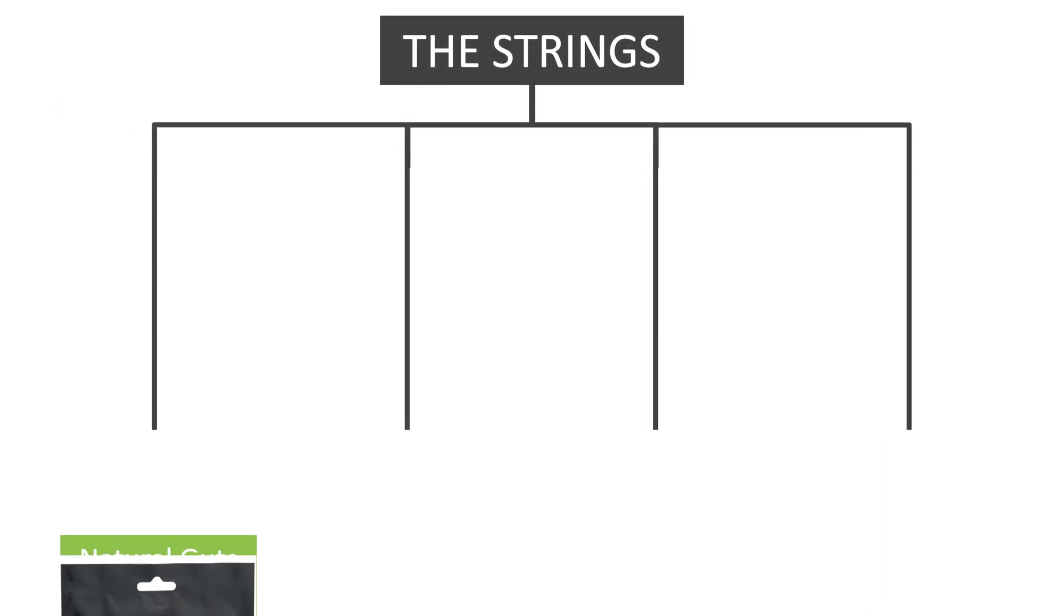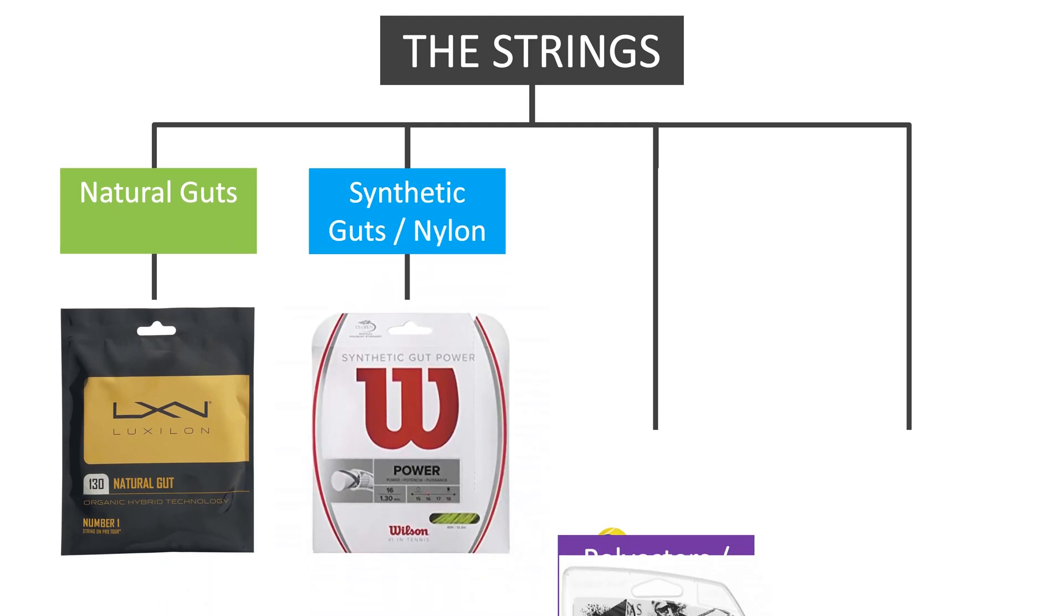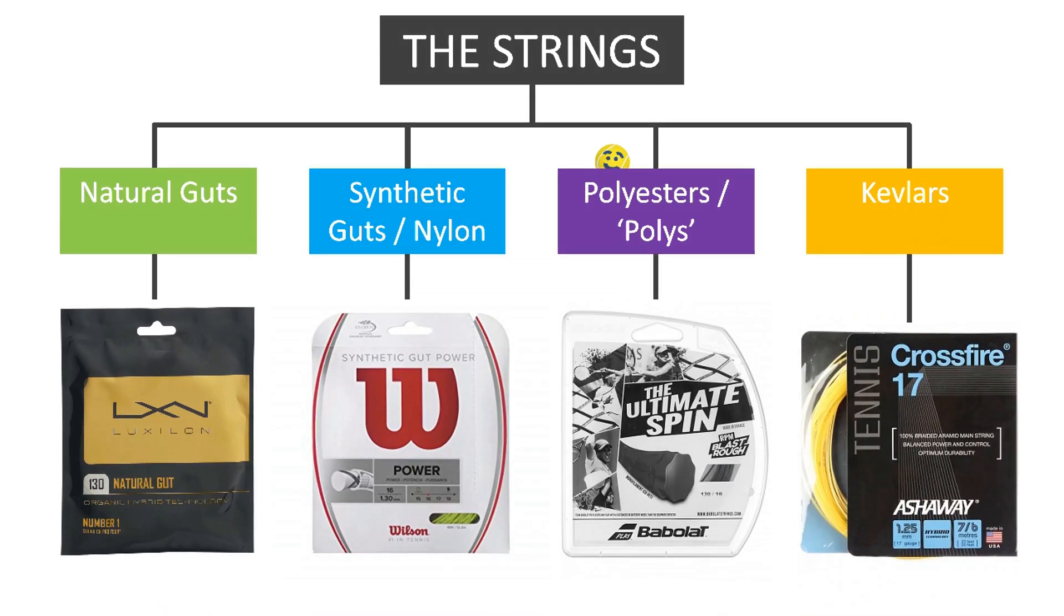Tennis strings are vital to allow a player to dramatically alter the feel of the racket and its playability, simply based on the choice of string material and the tension it is strung at. Hence, the wide variety of polymers which can be found in them. Generally speaking, in tennis, there are four main types of strings: synthetic gut, natural gut, polyesters and Kevlar.